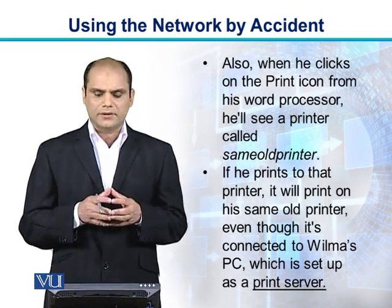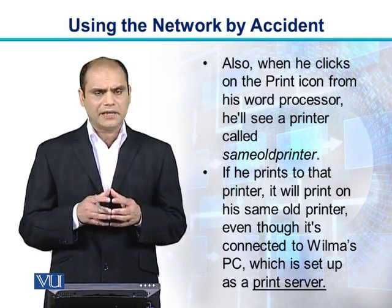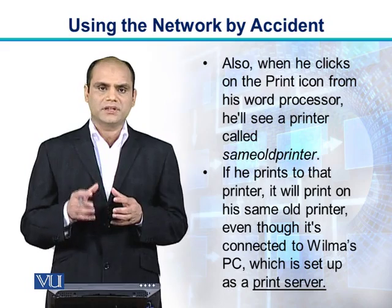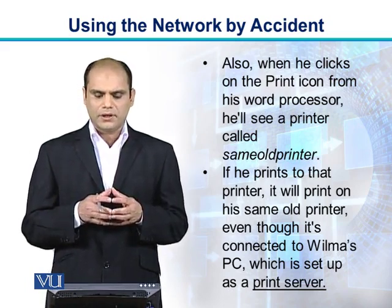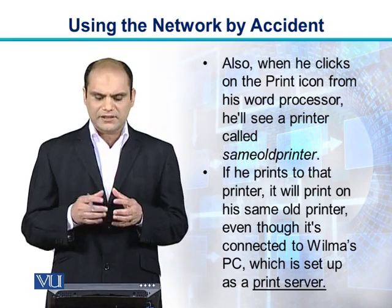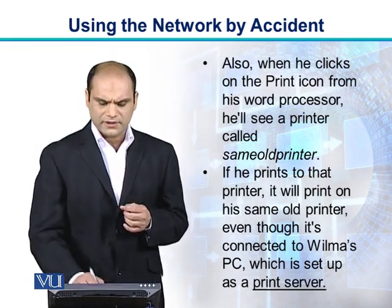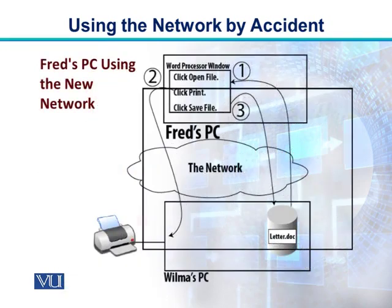Also, when Fred clicks on the printer icon from his own word processor, he sees a printer called the same old printer — the same printer that was attached to his PC before Wilma's presence. If he prints to that printer, it will print on his same old printer even though it is now connected to Wilma's PC, which is set up as a print server. If Fred had used the new network, he could open the same word processor window, fetch letter.doc from Wilma's hard disk, send the print command to the printer attached to Wilma's computer, then save the updated letter.doc back on Wilma's PC.